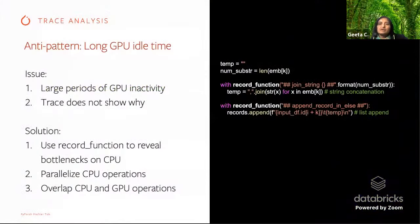These examples are from real workloads running for model training inside Meta. One common anti-pattern when you move to GPUs is that often you will encounter scenarios where your GPU is idle for a long time, and it is very difficult to figure out why. This inactivity can be easily discovered by adding the record functions, which will surface where the bottlenecks are on the CPU side and help you parallelize CPU operations and overlap CPU and GPU operations.